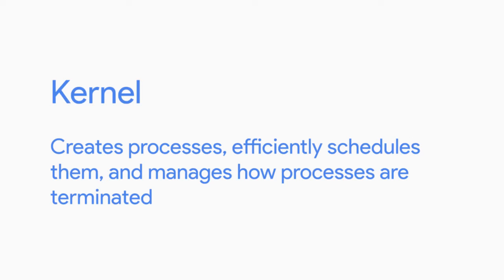If your computer is running slowly and your CPU resources are being maxed out, there could be many factors at play. It's possible that one process is taking up more time slices than it should, meaning the next process can't be executed. Another possibility is that there are too many processes wanting CPU time and the CPU can't keep up. The kernel creates processes, efficiently schedules them, and manages how processes are terminated — this is important since we need a way to collect previously used resources and reallocate them to another process.